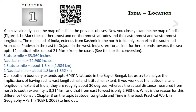Let us try to analyze the implications of having such a vast longitudinal and latitudinal extent. If you work out the latitudinal and longitudinal extent of India, they are roughly about 30 degrees, whereas the actual distance measured from north to south extremity is 3,214 km and that from east to west is only 2,933 km.